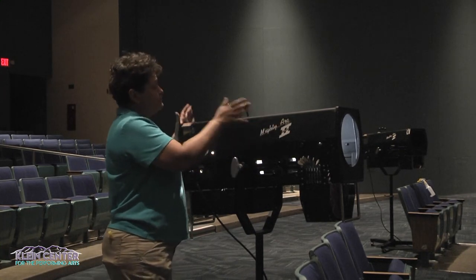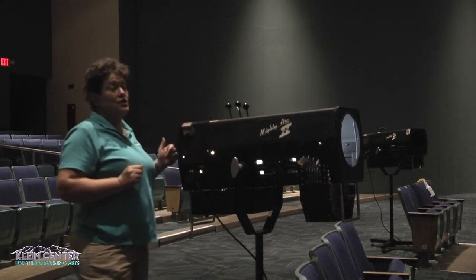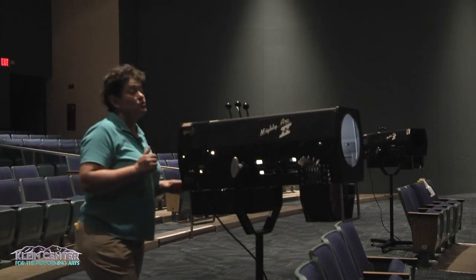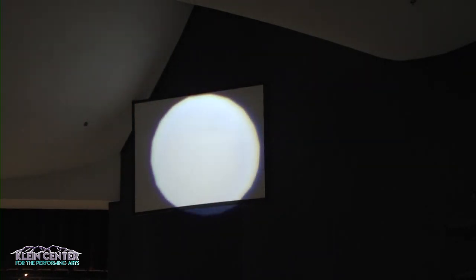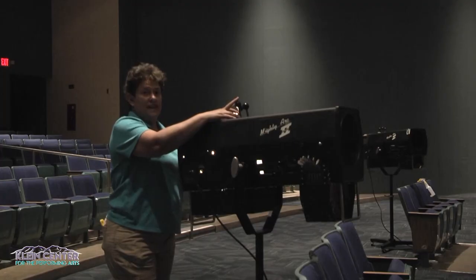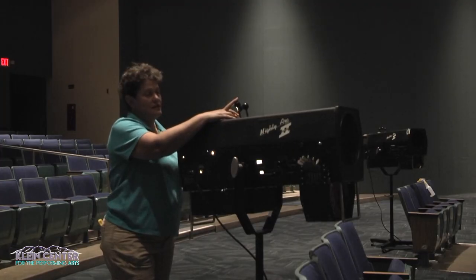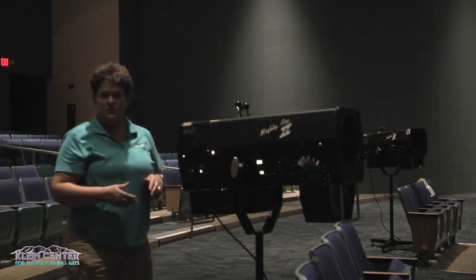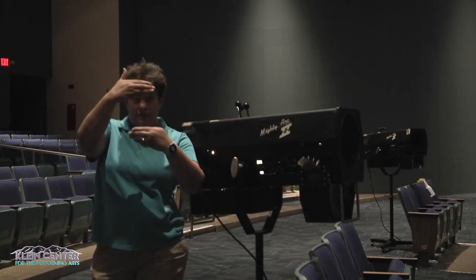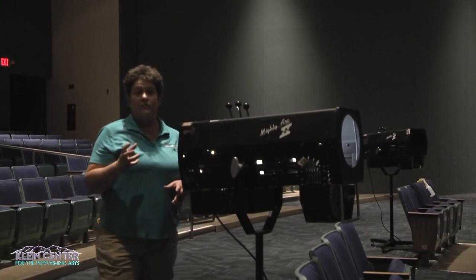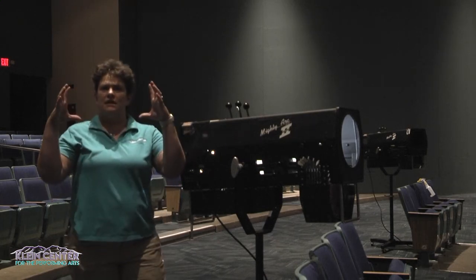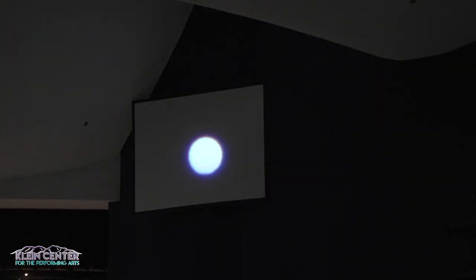After we focus it, the main controls for this instrument are on the top and there are three. The first is a fade shutter — it fades the light completely out. The next is a chop shutter. Just like on the ellipsoidal, if we imagine sliding in the top and the bottom, that's what this control does. The last is the iris, and the iris makes the beam larger or smaller.